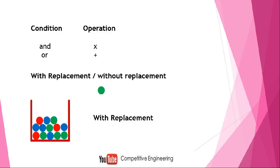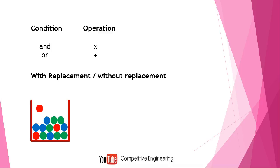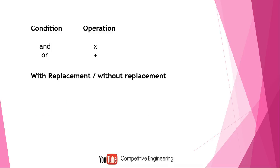In with replacement, each time I take a ball, the total number of chances available to me remains the same. For example, when I take a red ball I have 14 chances. Then when I go to take the next ball — say a green ball — the total number of chances is again 14, because I replaced the first ball. So in replacement, total number of chances stays the same.